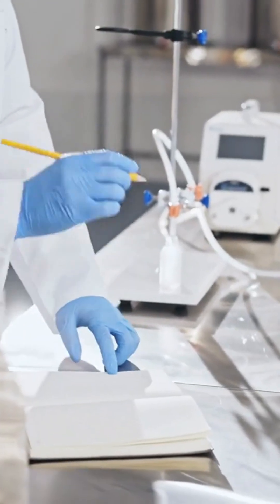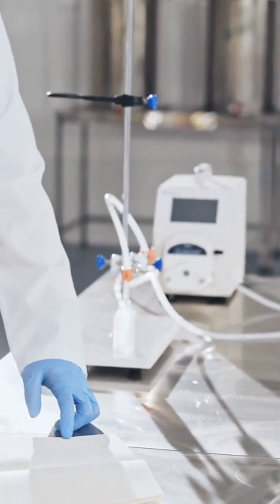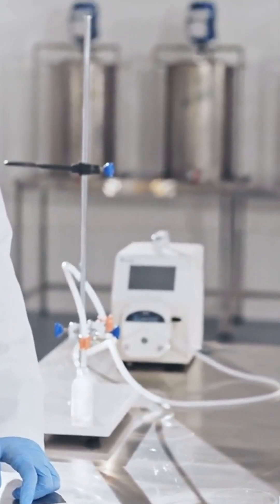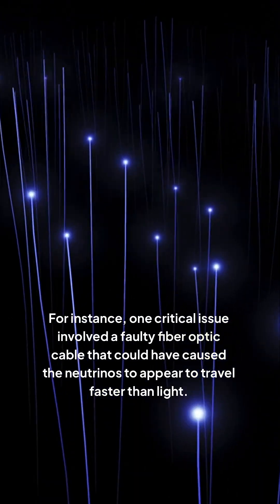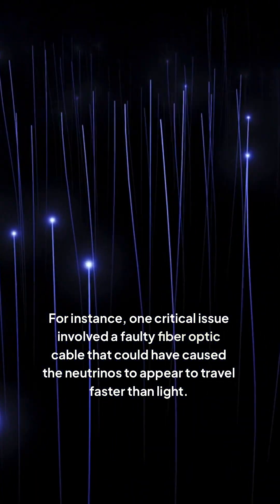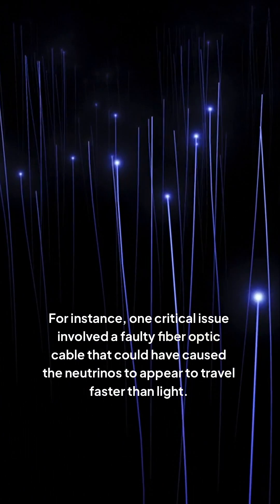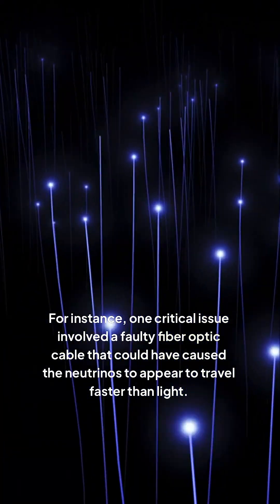However, upon further review and additional experiments, several potential sources of error were identified. For instance, one critical issue involved a faulty fiber optic cable that could have caused the neutrinos to appear to travel faster than light.